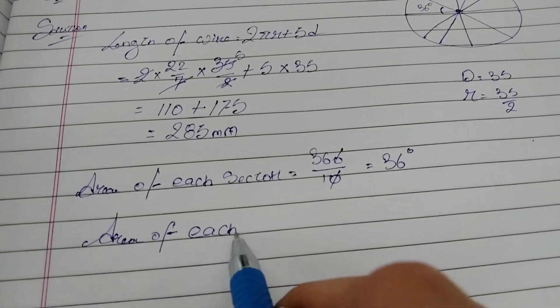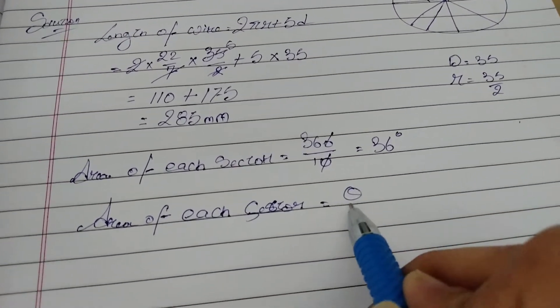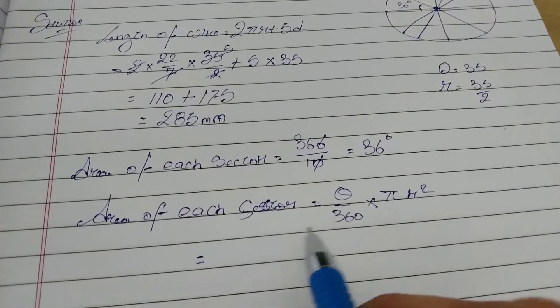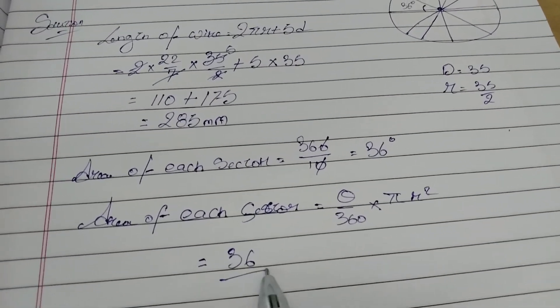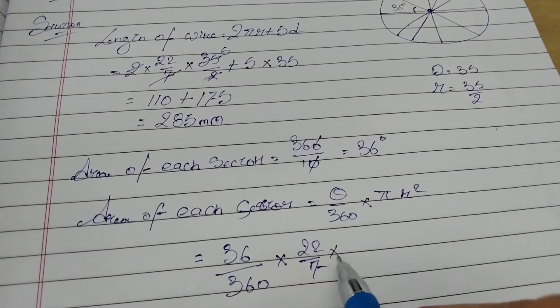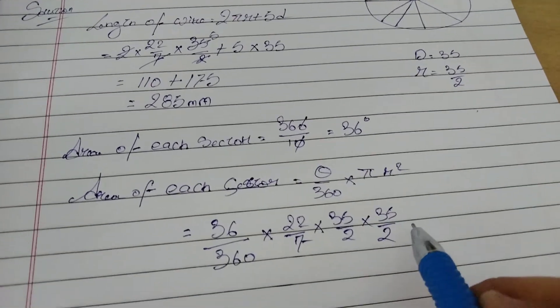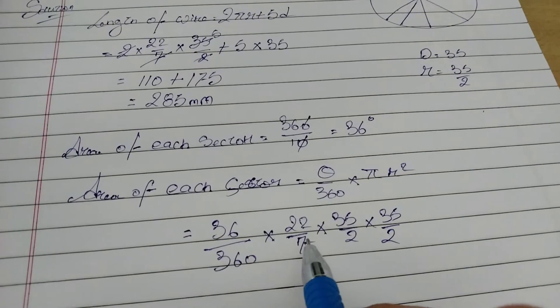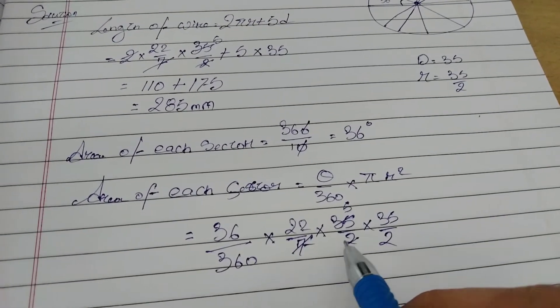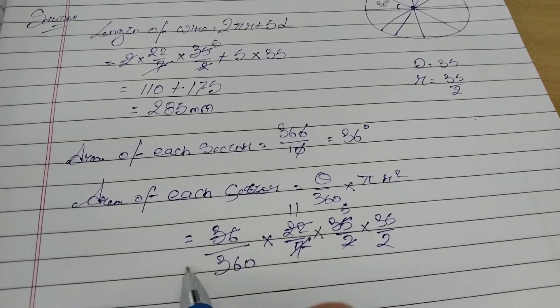Each sector is theta by 360 into πr². So theta we got 36 by 360, into π is 22 by 7, into radius is 35 by 2 into 35 by 2. Can we cancel anything? Seven divides 35, seven divides 35, two into 2 equals 11. Thirty-six tens are 360.